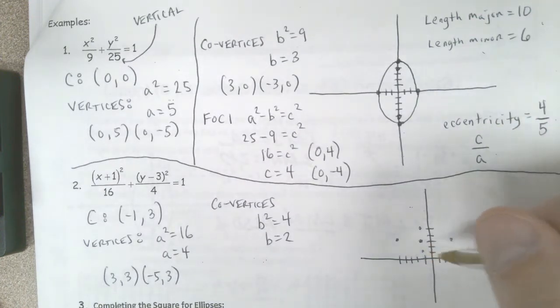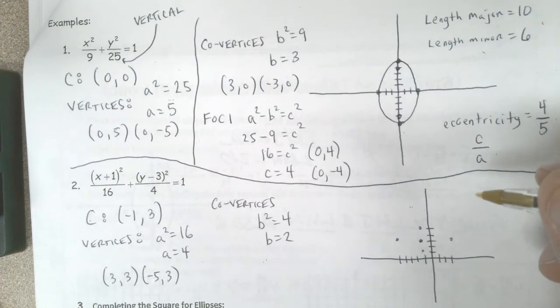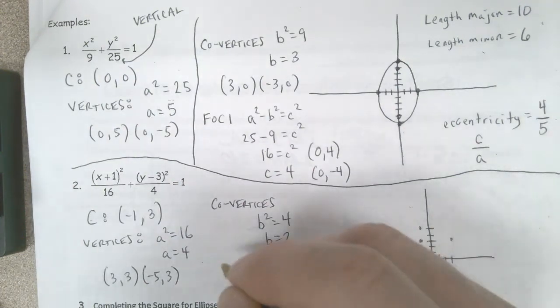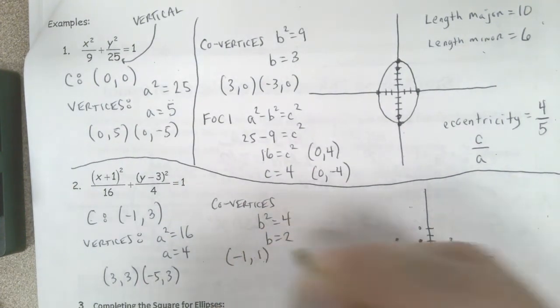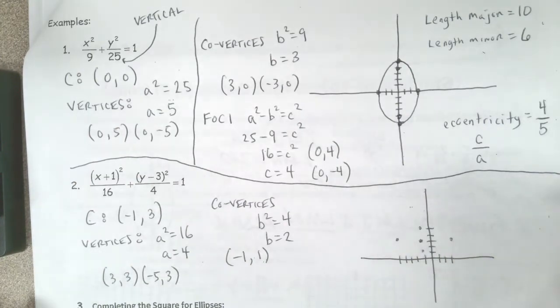So those points would be the points negative 1, 1 and the point negative 1, 5.